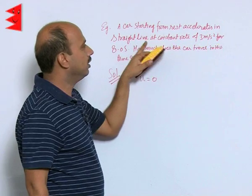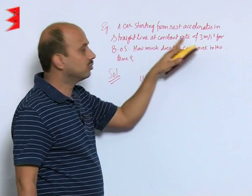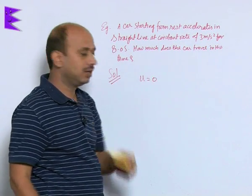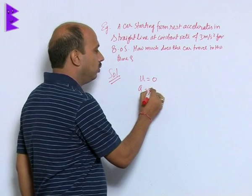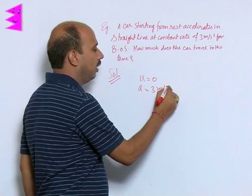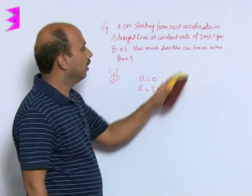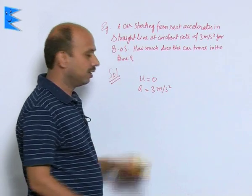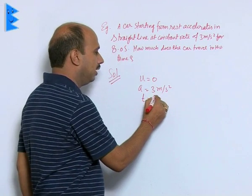Now, accelerates in a straight line at constant rate, constant rate means uniform acceleration, a equals 3 meters per second squared. Now for time 8 seconds, time you have got 8 seconds.